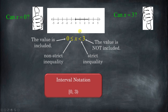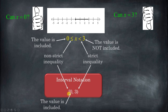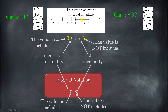So in interval notation, this is what interval notation would look like for this inequality and graph. We have a square bracket for 0 because that's a non-strict inequality — 0 is included. Everything between 0 and 3 is included, but 3 itself is not. The 3 with parentheses is not included. So the range of values is anything greater than or equal to 0 but less than 3. All three representations mean the same thing.